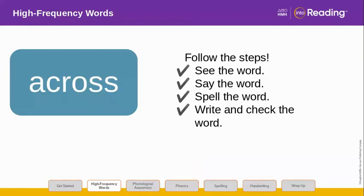My friend lives across the street from me. Say the word again. Across. Look at the letters in the word. Let's spell it aloud. A-C-R-O-S-S. Now write the word across. Try to write it without looking. Then check it.